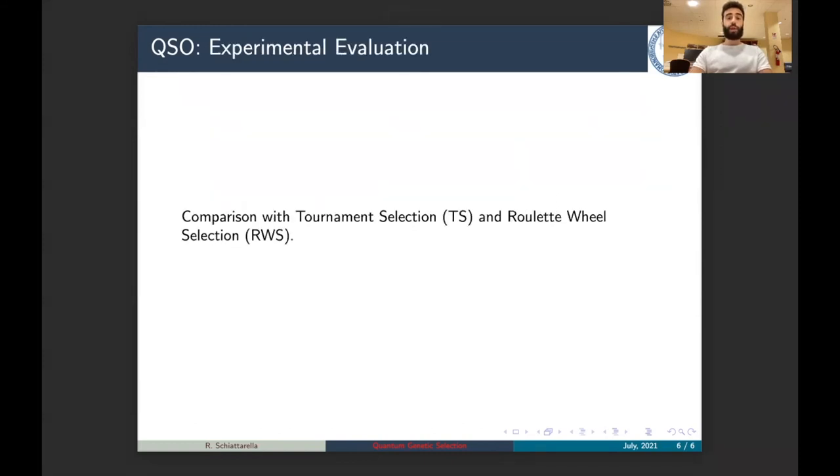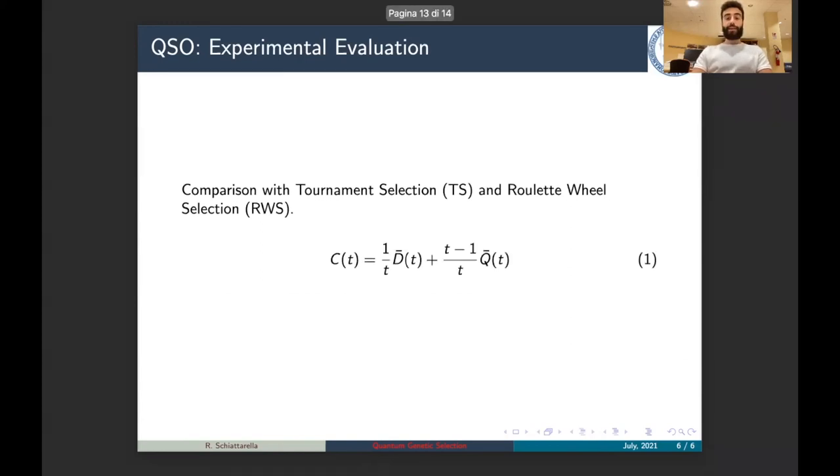In our experimental evaluation, QSO has been compared with tournament selection and roulette selection, equipping three different genetic algorithms, each one with one of these three genetic selection operators. We compared the results of the three genetic algorithms by means of the metric here reported that can be found in the literature, and it is a balance between diversity within the genetic population and the quality of the solutions within the same genetic population.